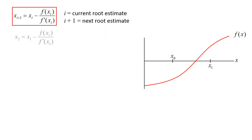We can use this equation to find the next root estimate x2, which is x1 minus the function evaluated at x1 divided by f' evaluated at x1. Graphically, we are starting at f evaluated at x1, and following the slope f' evaluated at x1 down to the x-axis where we reach x2.